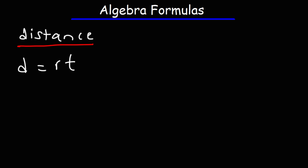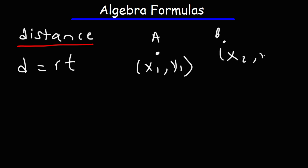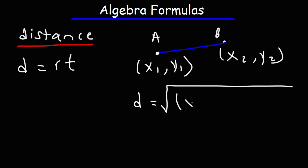Now if you want to calculate the distance between two points — let's say you have point A and point B and you're given their coordinates — you can calculate the distance between the two points using this formula: the distance is the square root of (x2 minus x1) squared plus (y2 minus y1) squared.